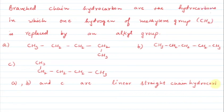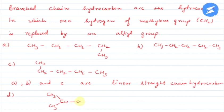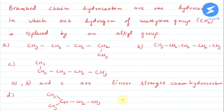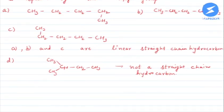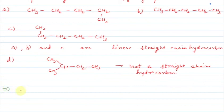Whereas our option D is CH3 — carbon with CH3, CH2, and CH3. So what is happening here? There is branching here — a methyl group replaces a hydrogen. That means this is not a straight chain hydrocarbon. This is not a straight chain hydrocarbon. Hence, option D is correct.